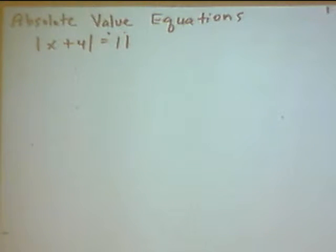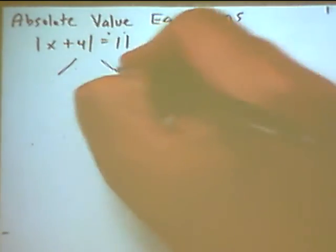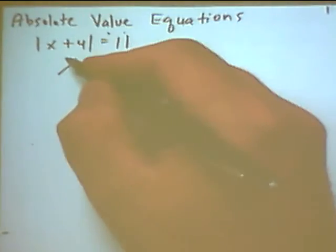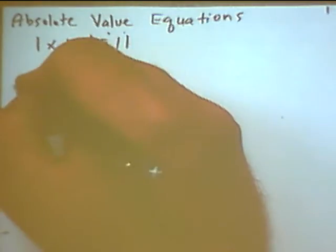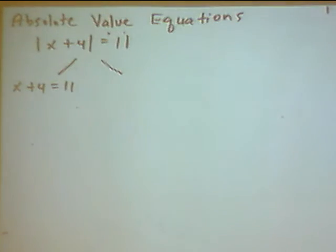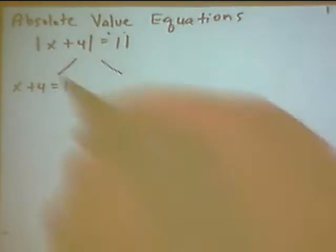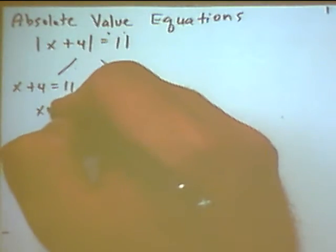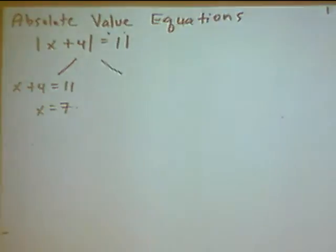So, first thing we have to check is the absolute value by itself on one side. In this case, yes, it is. So now I look at the number, and I see it's a positive number, so therefore I'm going to break this up into two separate problems. The first problem, you drop the absolute value signs and then write the equation and solve it. So in this case, I'll subtract 4 from both sides. x equals 7 should be a solution.